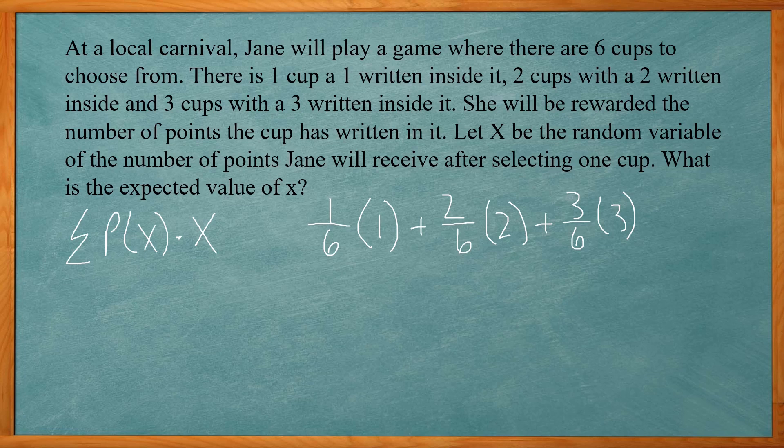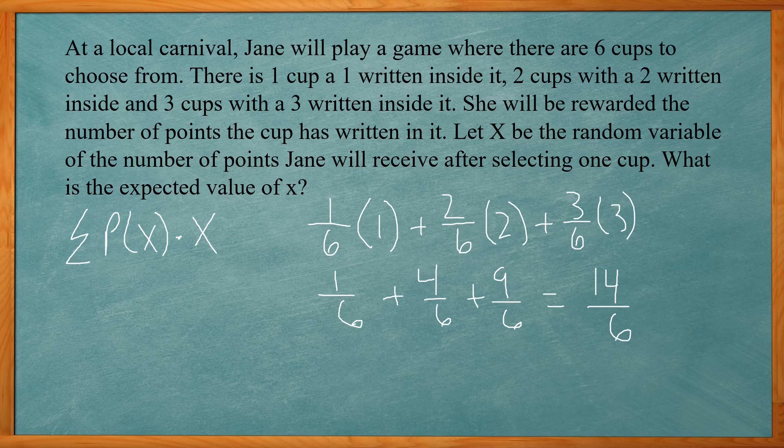All right, so we multiply each out. You get one over six plus four over six plus nine over six. So one plus four plus nine gives you 14, so 14 over six, which will give you two and two sixths, or two and one third.